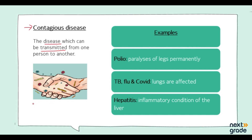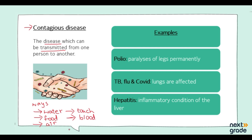There are many ways these diseases transfer from one person to another. The first way is that they can be transmitted through water or food. Some diseases are airborne as well. Some diseases can be transmitted through touch — like shaking hands or using things that have been used by an affected person — or through blood.